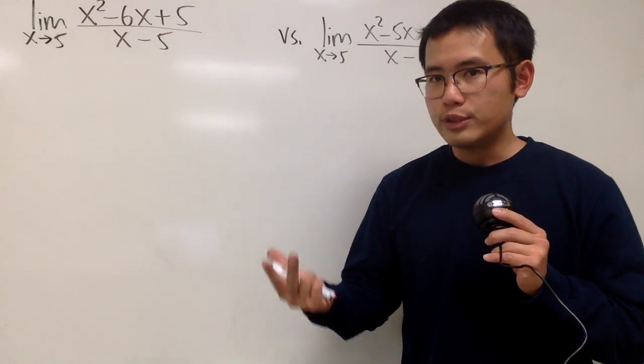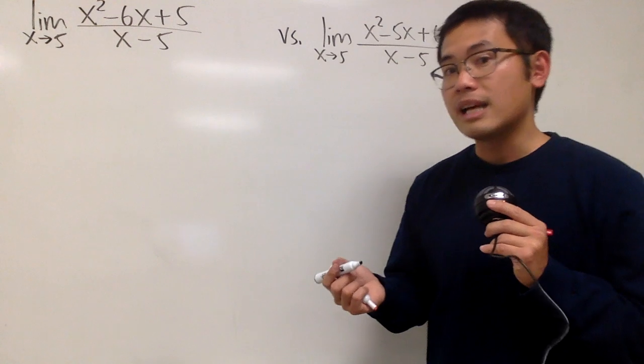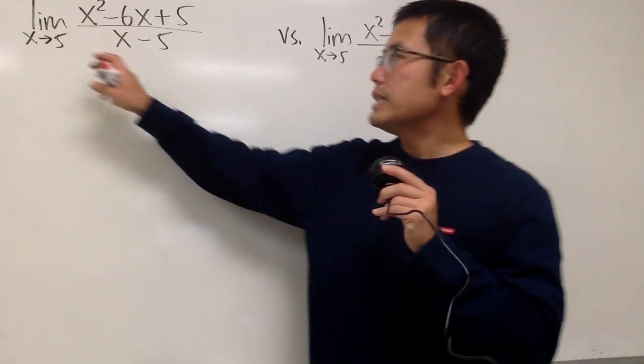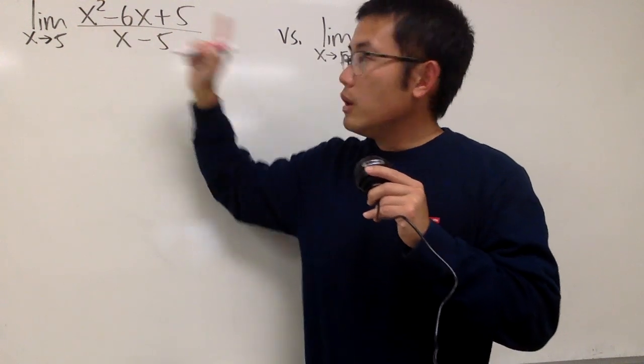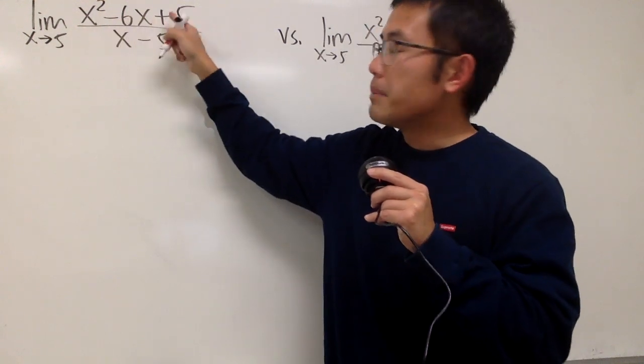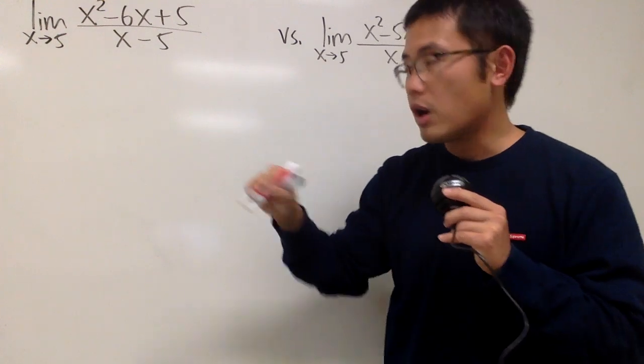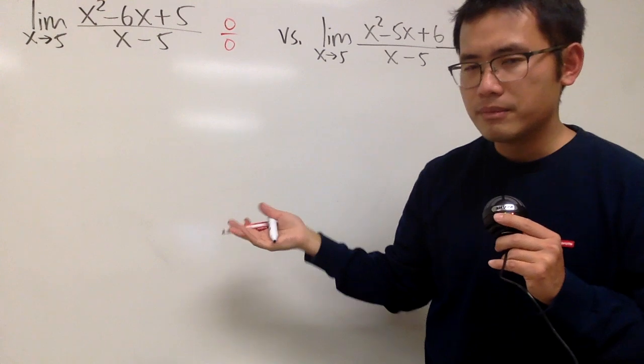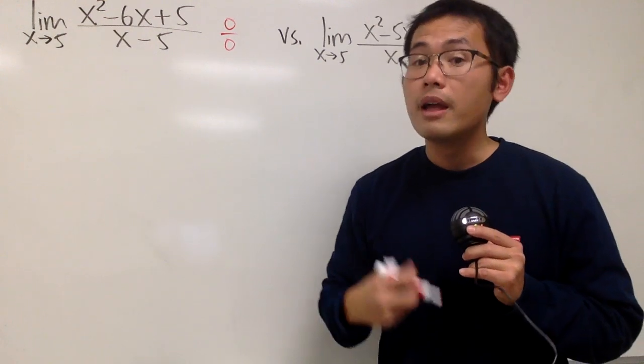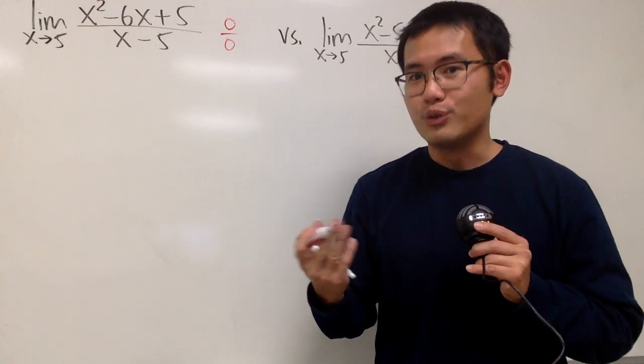Don't worry, just do it with the fundamental way I showed you guys in class before. Always plug in this number into all the x and see what happens. When we do that for the first one, 5² - 6×5 + 5, we actually get 0. And when we put in 5 right here, of course we also get 0. This is the 0 over 0 situation. That means we have to do more work in order to figure out the answer.